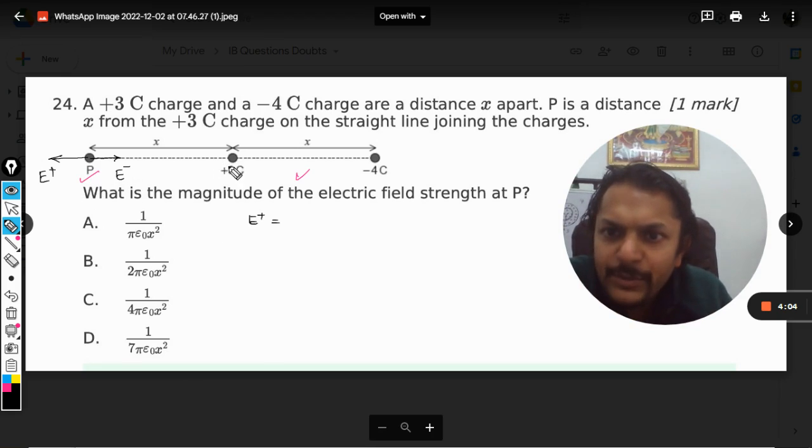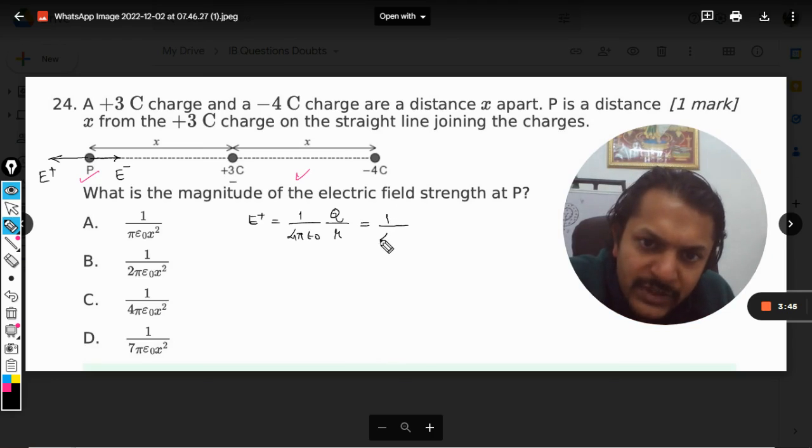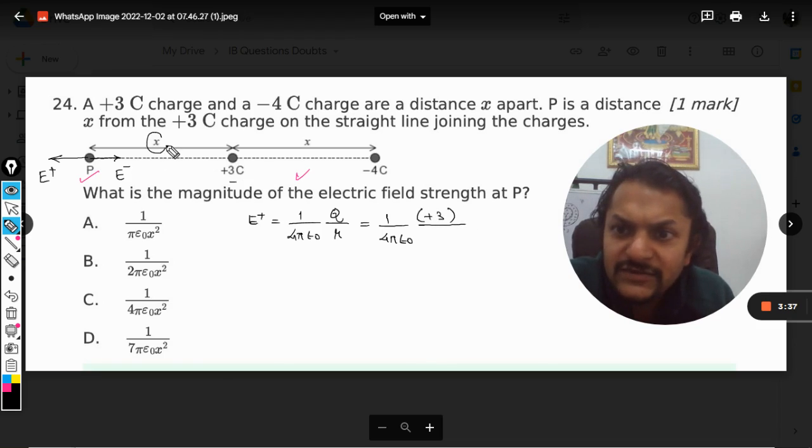The positive charge is here. The formula is 1/(4πε₀) × q/r², where q is the source charge and r is the distance between point P and the charge. It will be 1/(4πε₀) × 3/x², where we substitute q as +3 C and the distance as x.